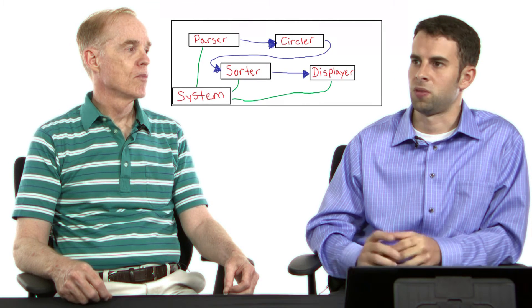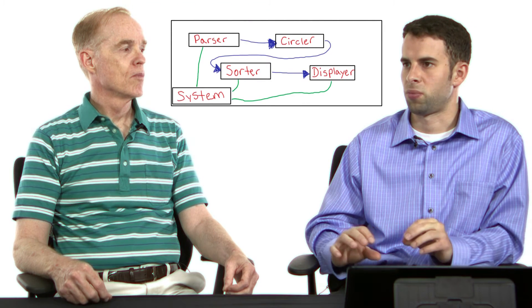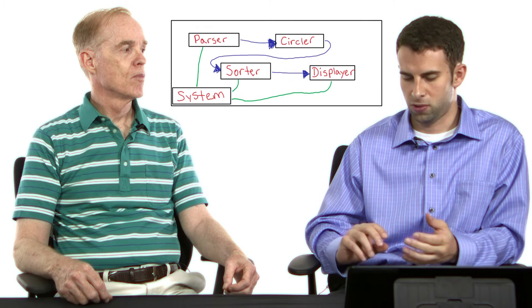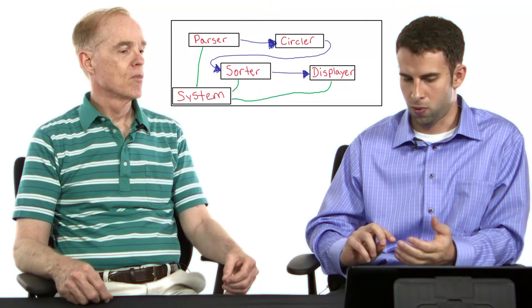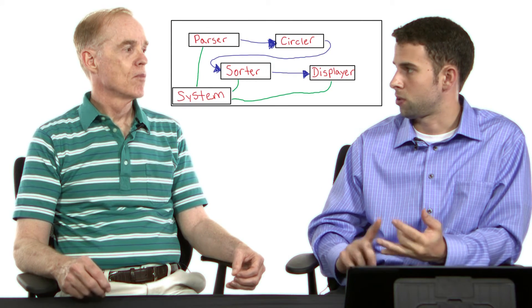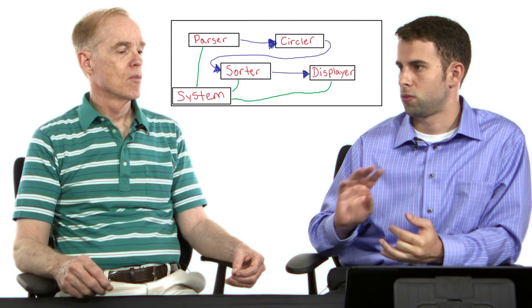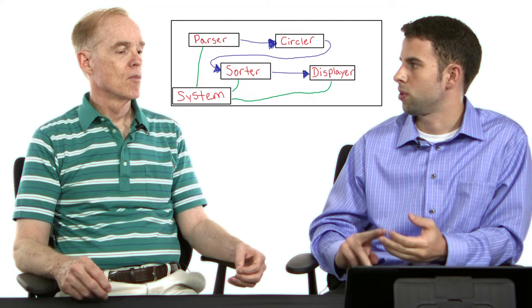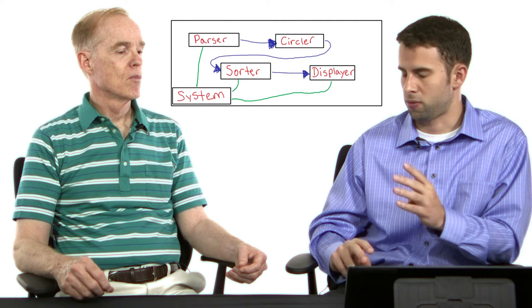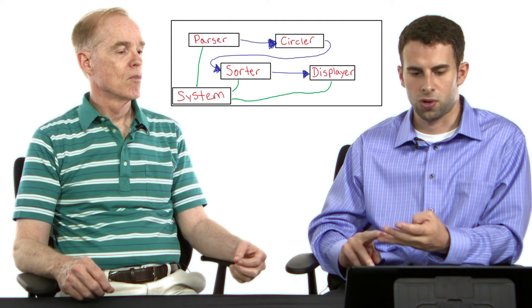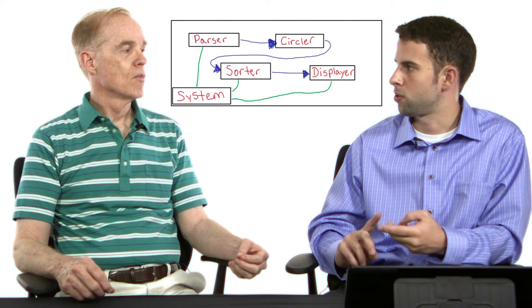So the system is still comprised of these components for parsing, something to circle what we've parsed and sort, and then to splice. So I have the parser, the circler, the sorter.